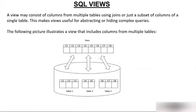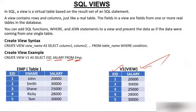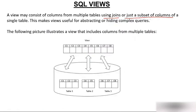Now comes a very important part. A view may consist of columns from multiple tables — just like a simple join. By using a join you have joined more than one table, and the result contains columns from more than one table. Similarly, a view can have columns from more than one table. Or a view may have just a subset of columns from a single table.